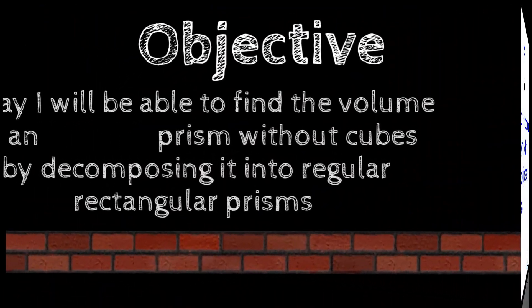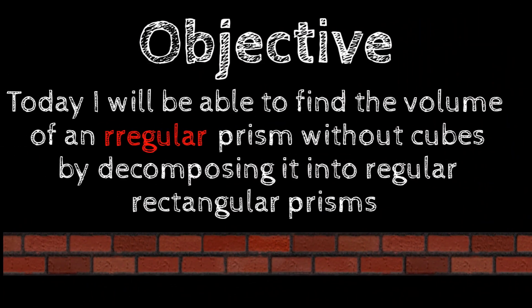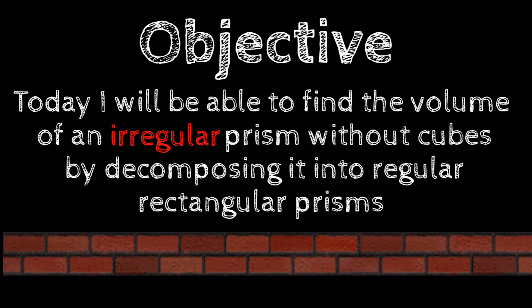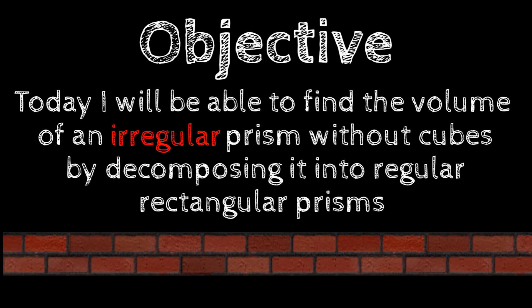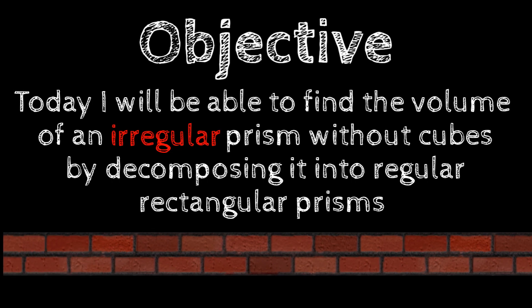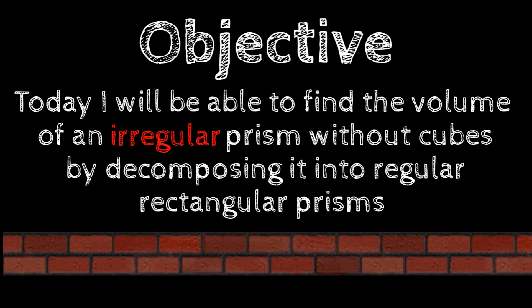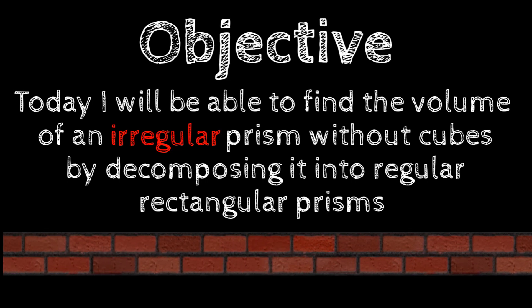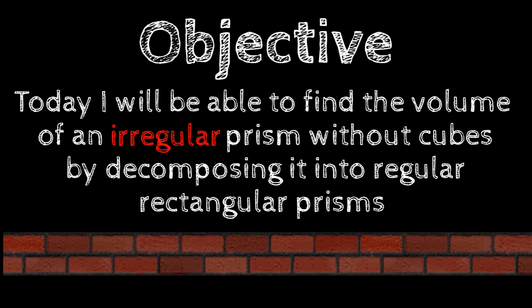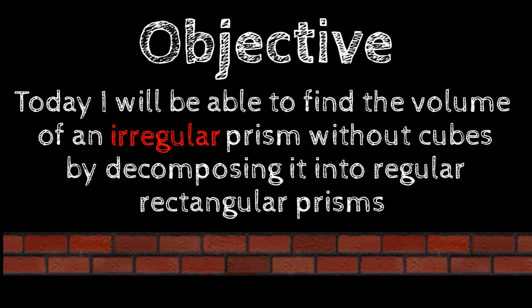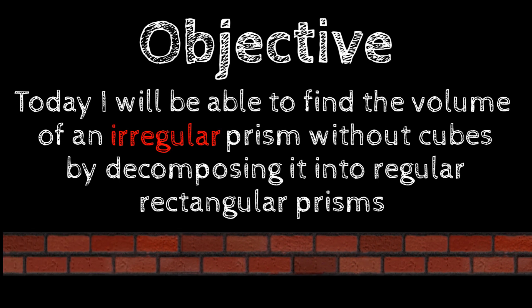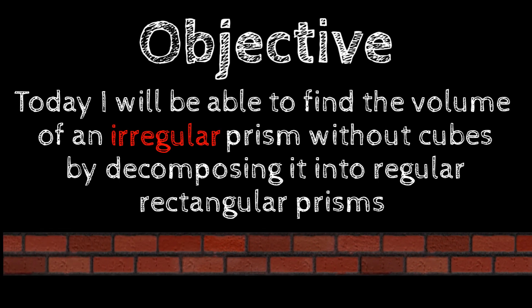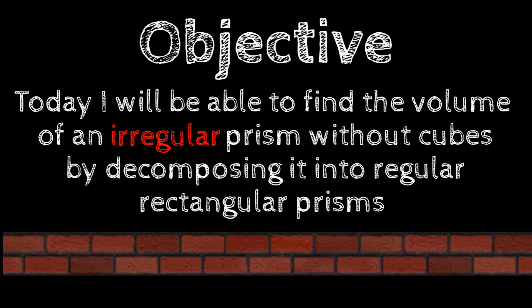Our objective today: I will be able to find the volume of an irregular prism without cubes by decomposing it into regular rectangular prisms. So very similar to what we did last lesson, except now the prisms won't be made of unit cubes.